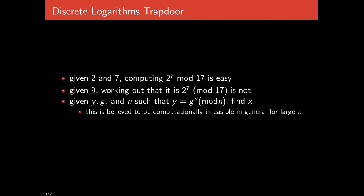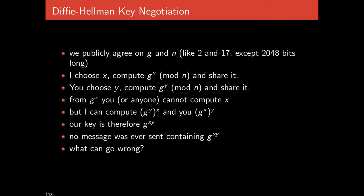Given y, g, and n such that y = g^x mod n, determining x is believed to be computationally infeasible for an adversary with a computational bound, as long as n is large enough. The key point is that discrete logarithms allow for key negotiation, known as Diffie-Hellman key negotiation. First, there is some public agreement on what g and n should be — like 2 and 17, except in practice thousands of bits long to actually be secure. These can be standardized; g and n are standard values that everyone uses.